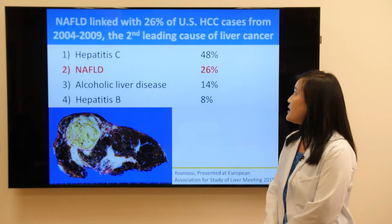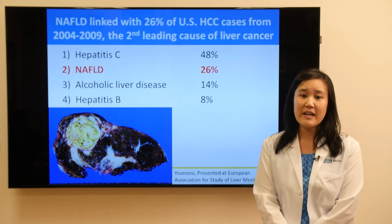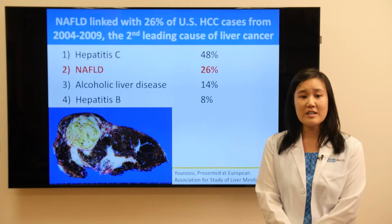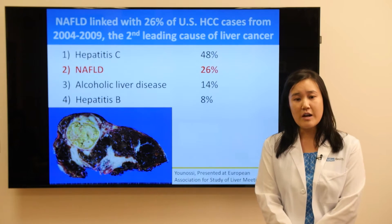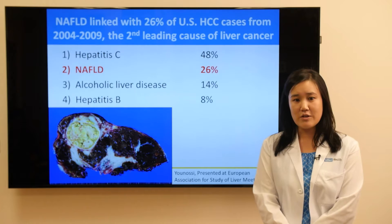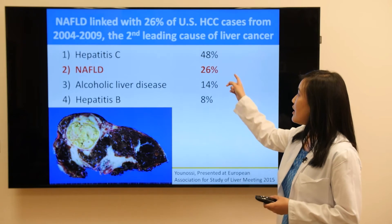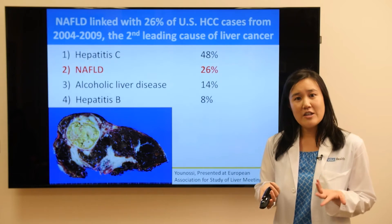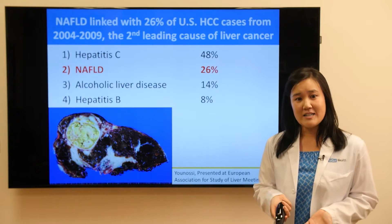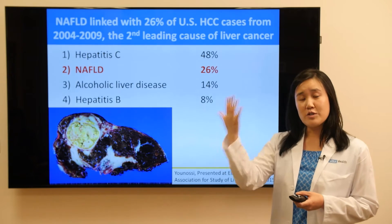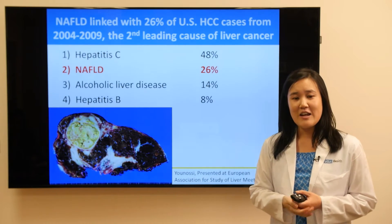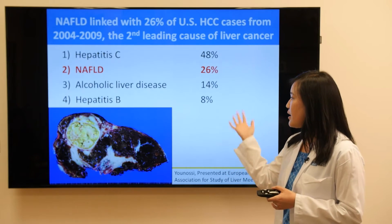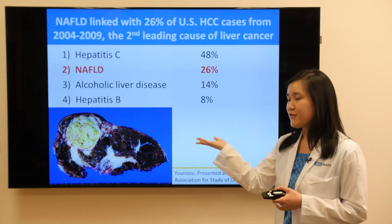Fatty liver has been linked with nearly 30% of U.S. liver cancer rates. Looking at statistics from 2004 to 2009, fatty liver-driven liver cancer was number two. The number one cause of liver cancer is hepatitis C at 48%. But now that there is effective treatment for hepatitis C, fatty liver will likely surpass hepatitis C in terms of etiology for liver cancer.